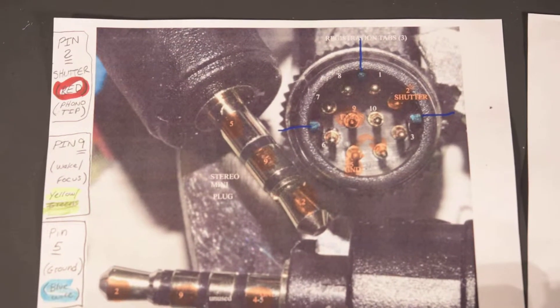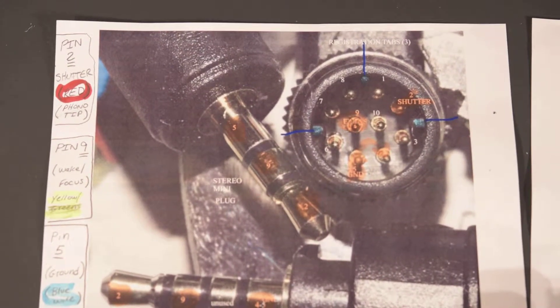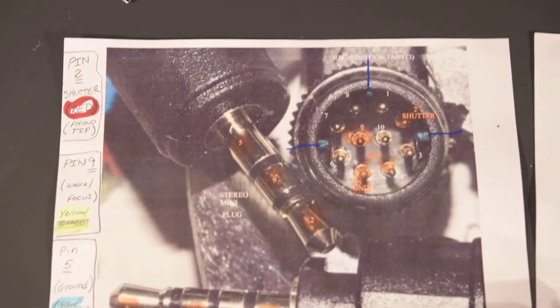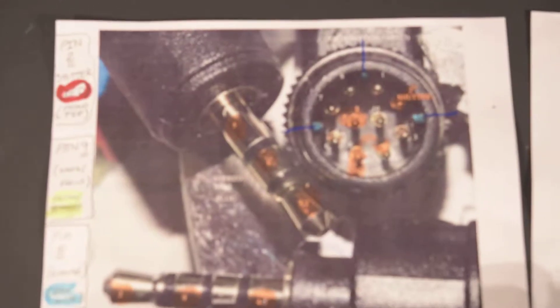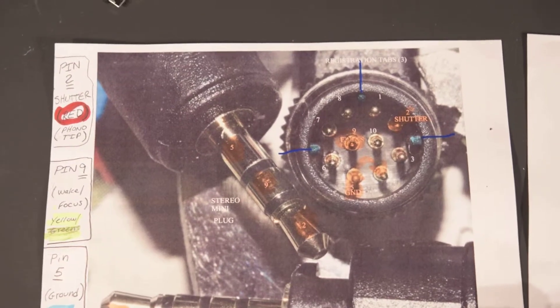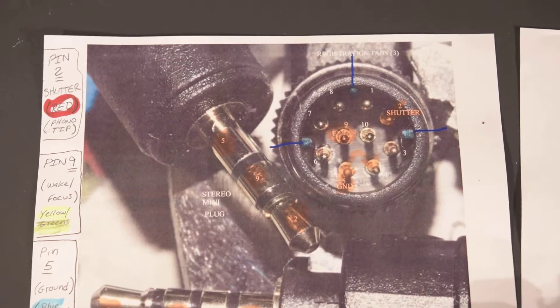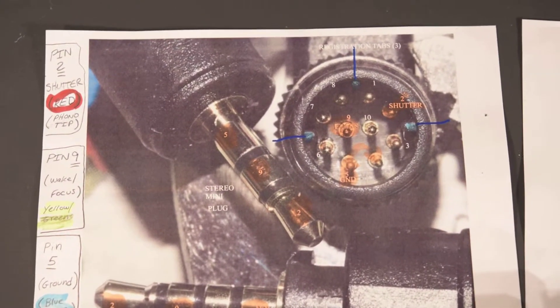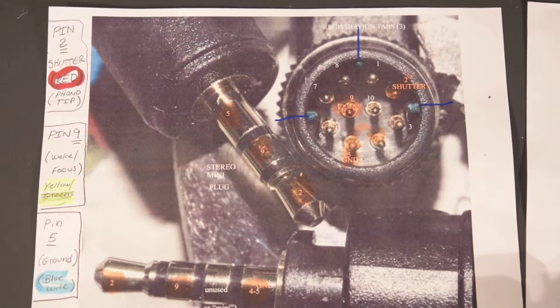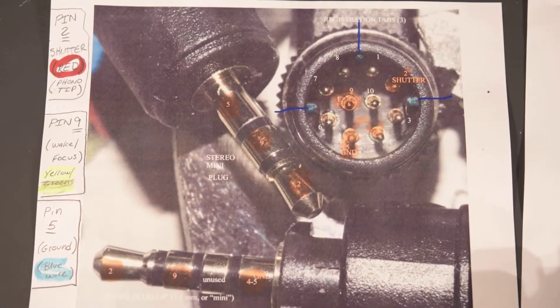And as you go along and go around, you'll see that in the about the seven o'clock position you'll see that is the common ground. And then pin nine, which is one of the two center pins, is the waking one that also sets up the autofocus. So I got this cable, it was only like about two bucks and it was for one of those wired remotes.